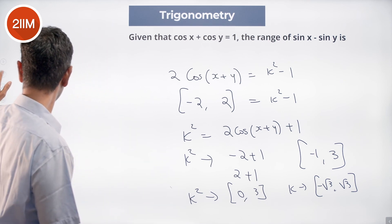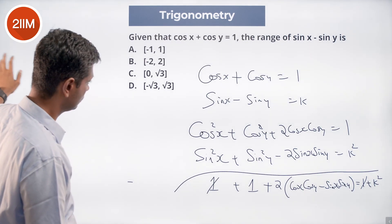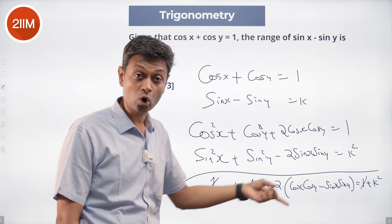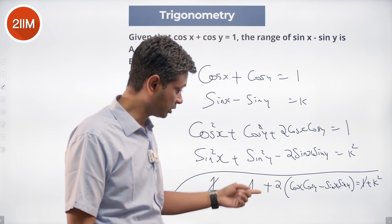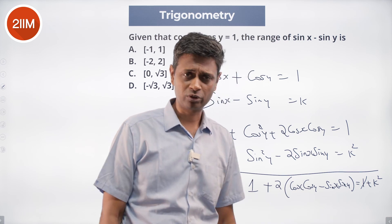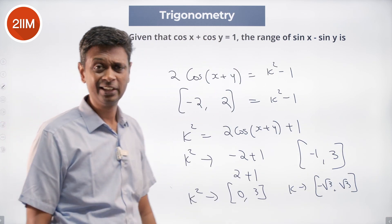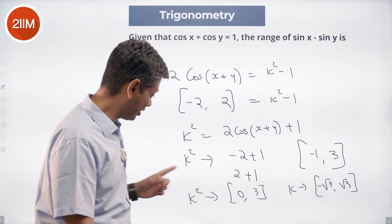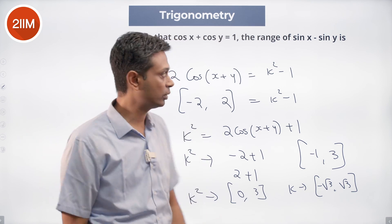What are we doing here? Square this, square this, add: 1 plus 1 plus 2 cos of x minus y equals 1 plus k squared, or 2 cos of x minus y plus 1 plus 1 is k squared. This goes from minus 2 to plus 2, so k squared should go from minus 1 to plus 3 — but it cannot go from minus 1 to plus 3, it can go only from 0 to 3. k squared goes from 0 to 3, so k goes from minus root 3 to plus root 3. Beautiful question.